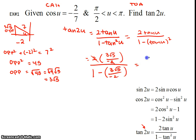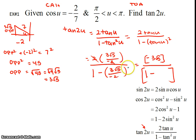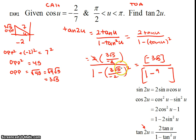Multiplying, the 2s cancel, so the numerator is negative 3 root 5. In the denominator, I have 1 minus the tangent squared. Since I need to square every piece — 3 squared is 9, root 5 squared is 5, and negative 2 squared is positive 4 — the denominator becomes 1 minus 9 times 5 over 4, which is 1 minus 45 over 4.